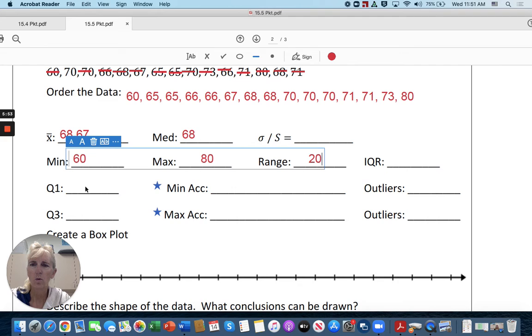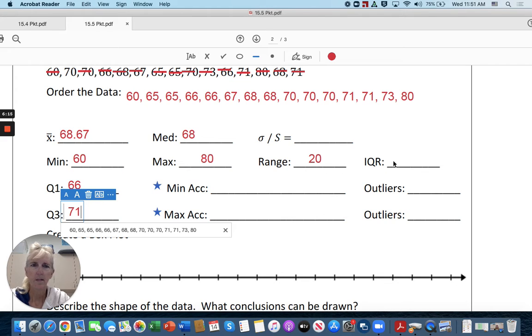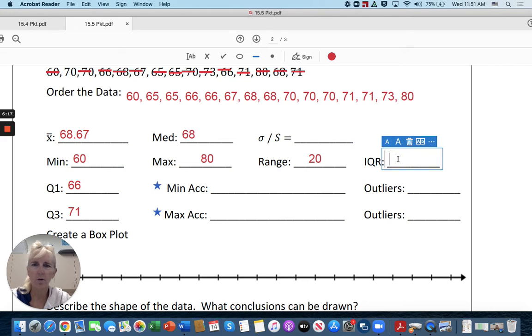And then quartile one. Let's see if we split the data. And we take the middle one of the lower half. Quartile one is going to be 66. And then of the upper half here, it's going to be 71. So the interquartile range is going to be 71 minus 66. Five.